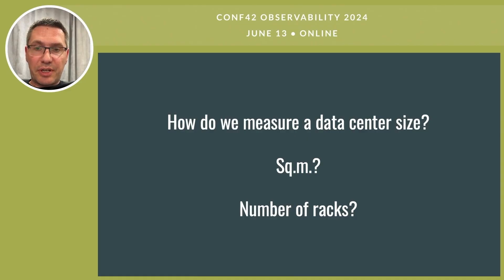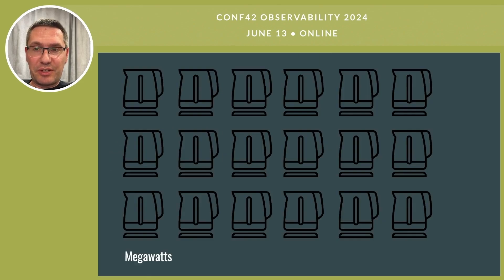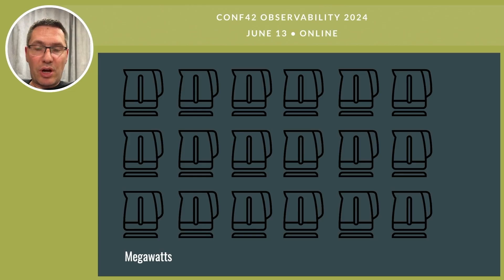Data centers come in different sizes, but how do we measure them? Not by area, not by rack count — data centers are measured in watts, their power capacity. A small-sized data center has a power capacity up to 3 megawatts, a medium-sized data center 3 to 10 megawatts, and 10 megawatts and more is considered large. For context, 1 megawatt is enough to power about 200 homes.